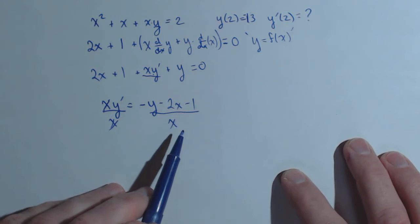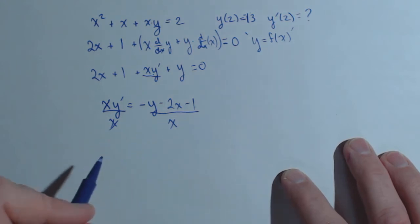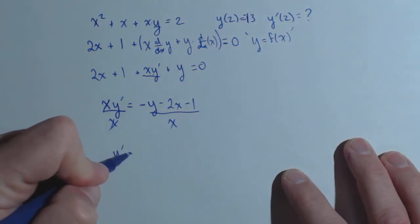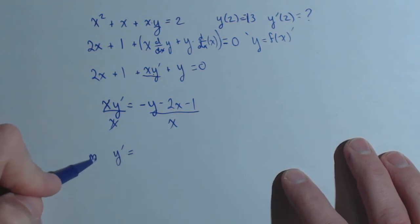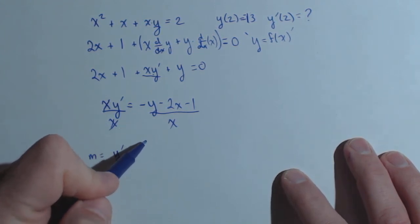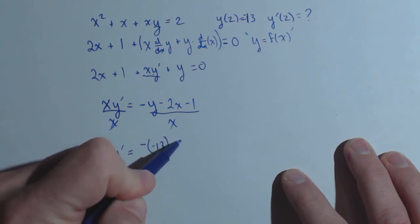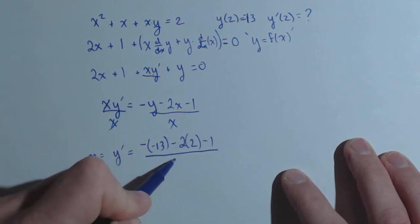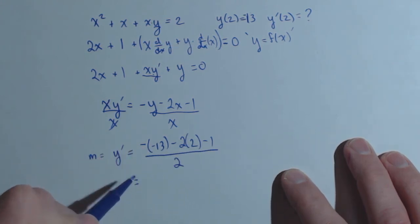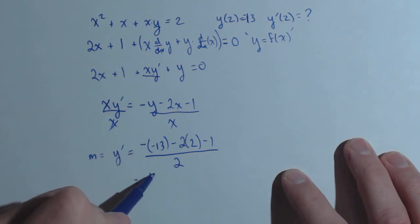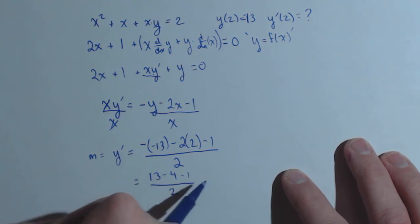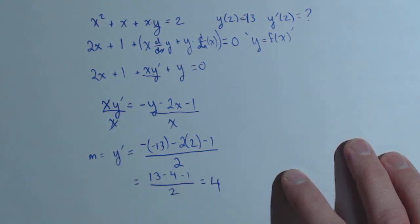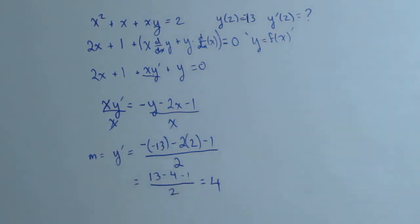So there's our derivative. Now to calculate it at the point 2, negative 13, we'll plug those values in. So this would be the slope of our tangent line. So we'll be plugging negative 13 in for y, so negative 13 minus 2 times 2 minus 1, all over 2, and we'll simplify. So 13 minus 4 minus 1, all over 2, so we get 8 over 2, or a slope of 4 for our tangent line.